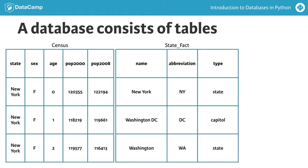Meanwhile, the state fact table on the right holds additional details about the states themselves, such as the abbreviation and type of the location.